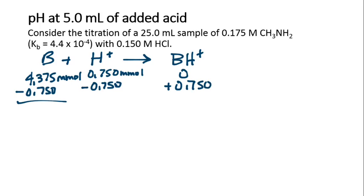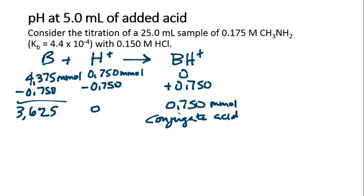So then what we've got here is 4.375 minus 0.75. We have 3.625 millimoles of B and no millimoles of H+, and 0.75 millimoles of this. This is the conjugate acid to our weak base. This is our base.